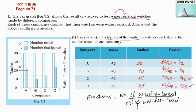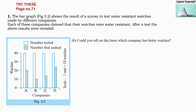The second question asks: on this basis, which company has better watches? Better watches means they should have fewer leaked watches. So let us note down the fractions from the first question. Company A has 1/2, B has 1/4, C has 3/8, and D has 5/8. Now we have to find which fraction is the least, because these fractions represent faulty watches.